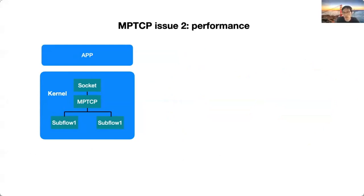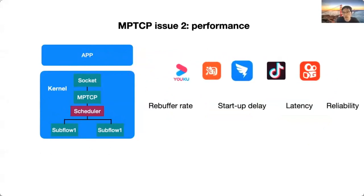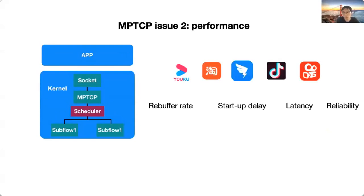A second issue is designing the best scheduling algorithm for multipaths. Different video applications require different QoS support — in long video, rebuffer rate is critical; in short video, startup speed is also important since users are less patient with slow starts. Therefore it is desired that the scheduler is highly customized for each app, but since MPTCP is in the kernel, designing a scheduling algorithm that can fit all different needs becomes extremely difficult.